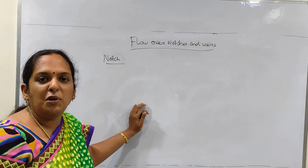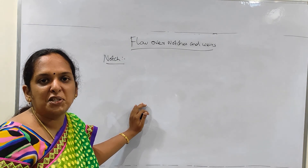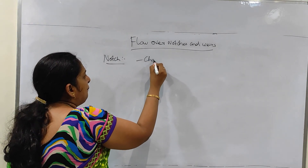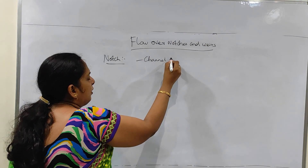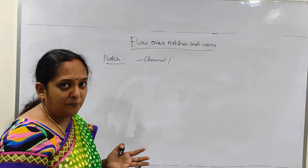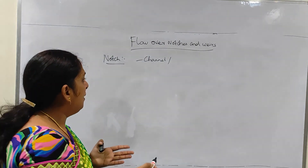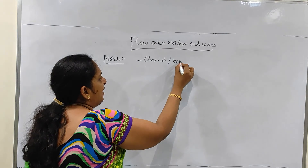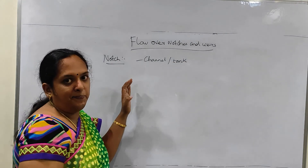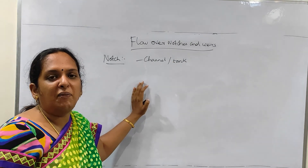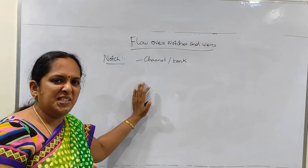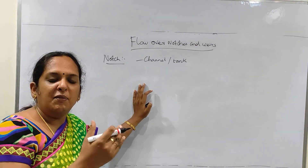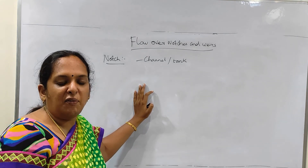What is a notch? It is once again a device used to measure the rate of flow only. But the rate of flow is going to be measured in case of a channel or a tank. So in case of your venturi meter or orifice meter, we measured the rate of flow in a pipe. But a notch is used to measure the rate of flow in a channel or a tank. This notch is basically a metallic plate which will be kept in the tank or channel.